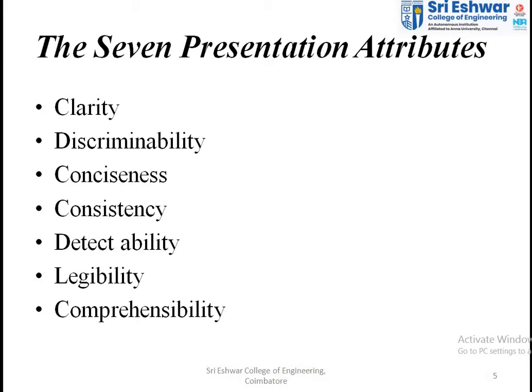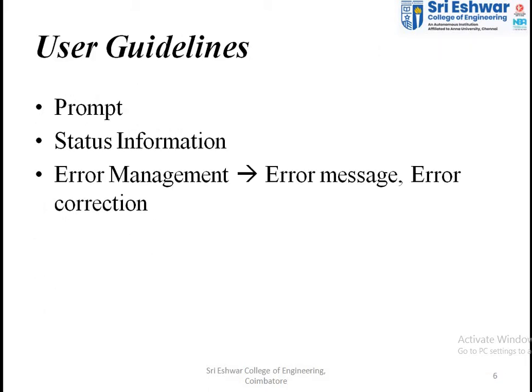The seventh attribute is comprehensibility — users should be able to understand and recognize the meanings of options presented to them. Options should not be at a difficult level. These are the seven presentation attributes you need to follow while designing a user interface.